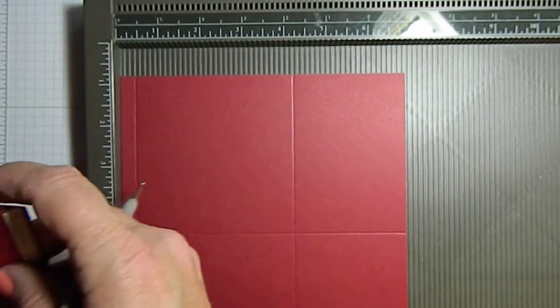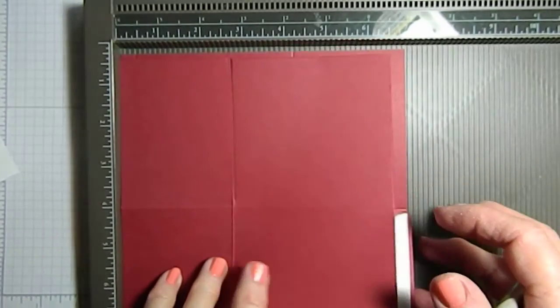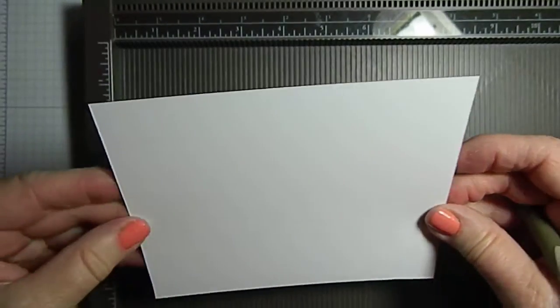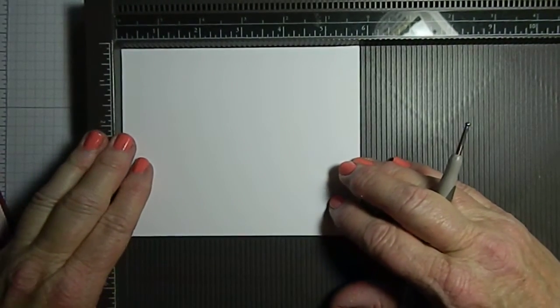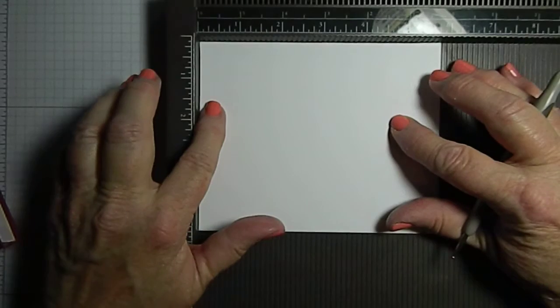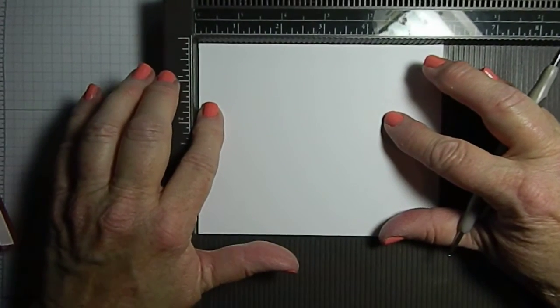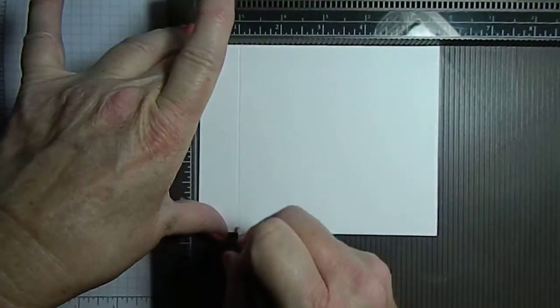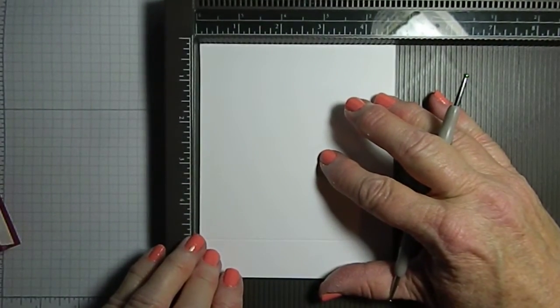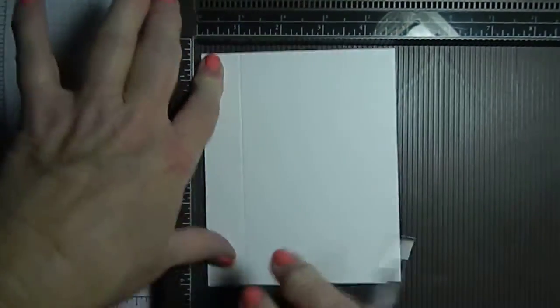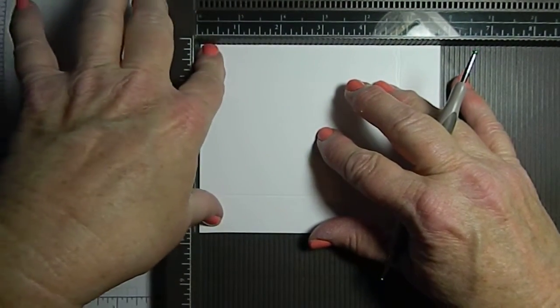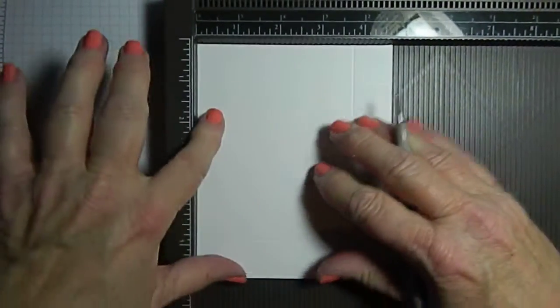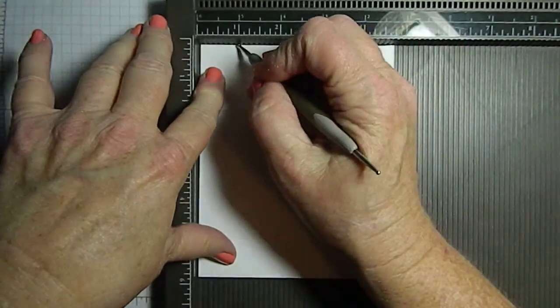Okay, now I've already prepared the other one. On the lid, you want to score it at one inch on all four sides, but when you put it in your scoreboard you want to move this over just a smidgen and score at the one inch. Do that on all four sides.